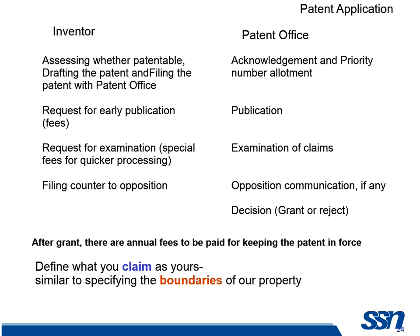Now let's look at the patent application — what happens and how do you apply? If I am an inventor, first I have to assess whether it is patentable, then draft the patent and file it at the office. Once I file it, the patent office gives me a priority number — the earlier you get it, the better. Then, after some time, I have to ask for early publication, or if I don't ask, it takes its own time — normally 18 months. If I ask for early publication with a special fee, they will publish it immediately. Then I have to go for a request for examination — unless you request it, they don't examine at all. Then if there is any opposition, I have to file a counter to opposition. After grant, there are also a lot of things to do — we have to keep paying annual fees.